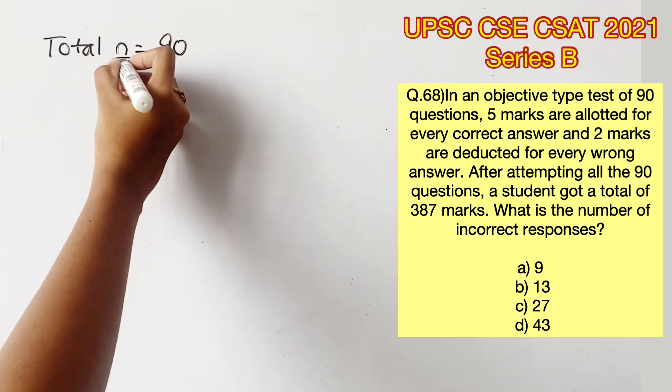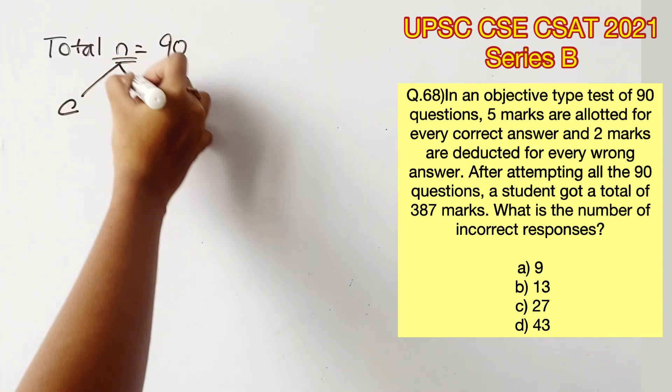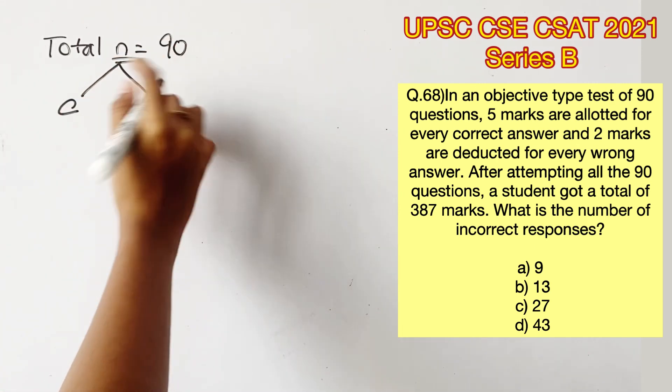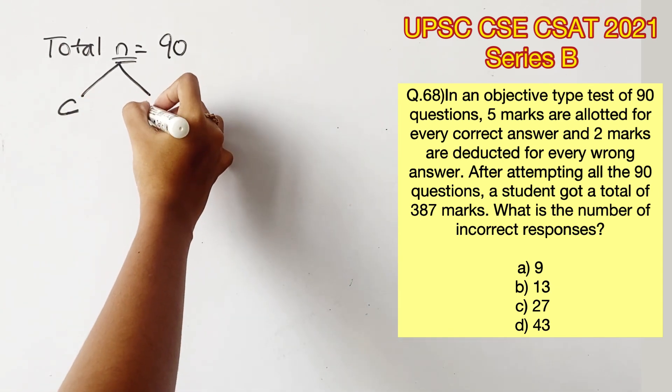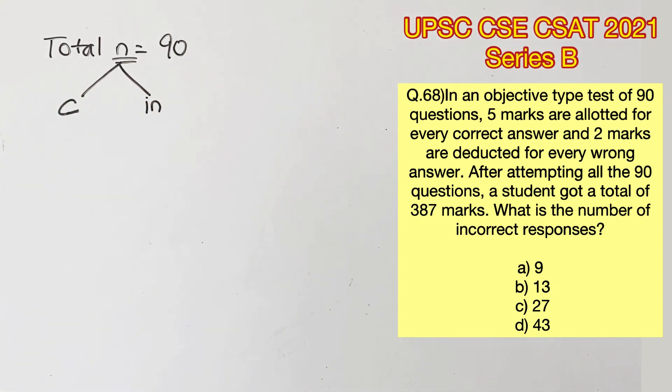Now a student has attempted all the 90 questions. Let's say c is the number of questions that he has attempted correctly, which means the remaining will be incorrect responses. The remaining can be represented as n minus c, which means we are subtracting the number of correct responses from the total number of questions.